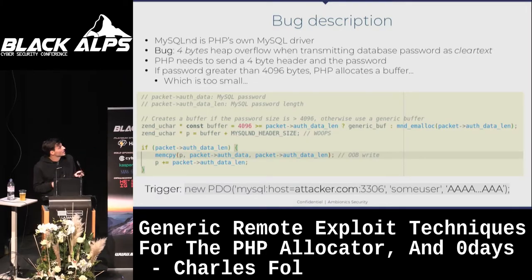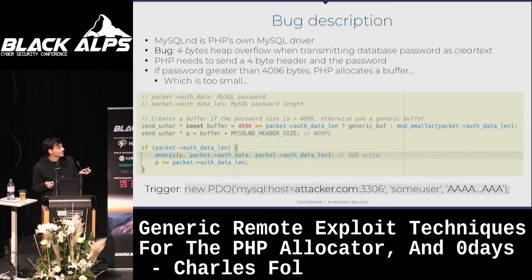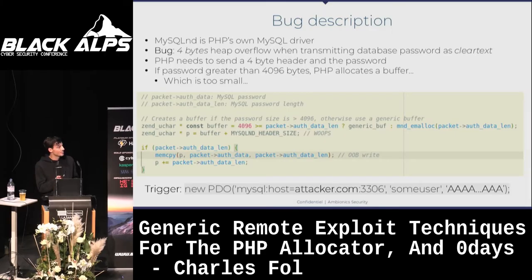This bug is pretty easy to spot. When you connect to a database, the database can ask for several authentication methods. If it asks for clear text authentication, PHP sends a MySQL header of size 4 plus the clear text password. But if your password is big enough, PHP wants to allocate the password plus the header but only allocates the size for the password. So when it does the memcpy afterwards, you get a four-byte out-of-bounds write — a four-byte overflow. To trigger it, you force PHP to connect to your database with a large password, your database requests clear text, and you get the overflow.